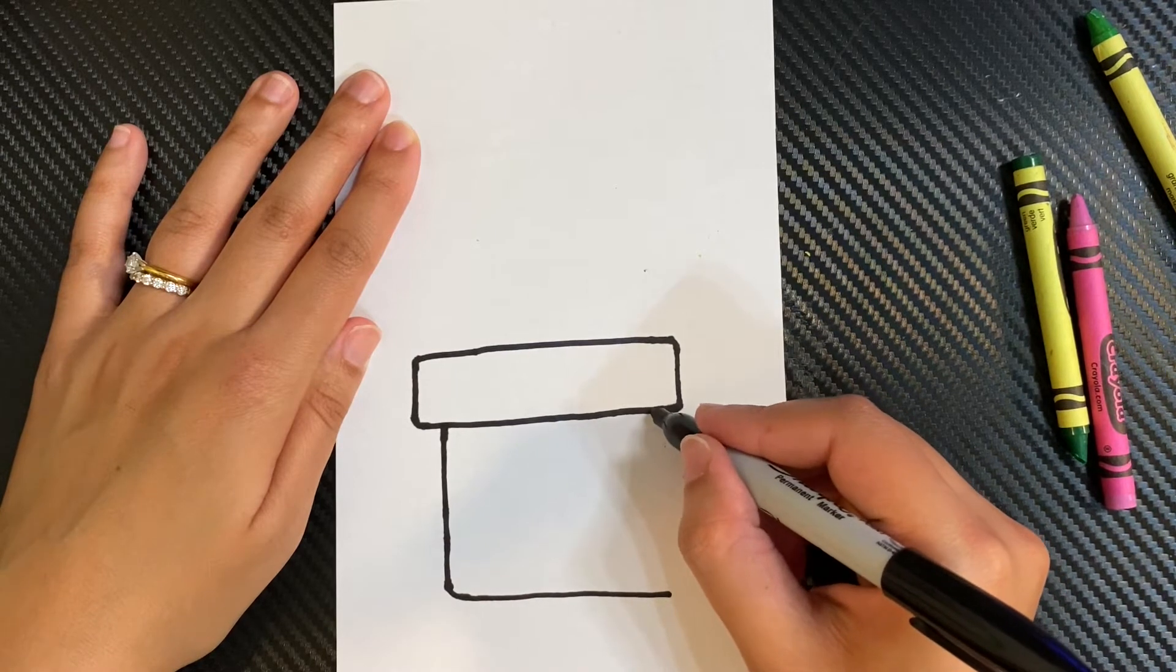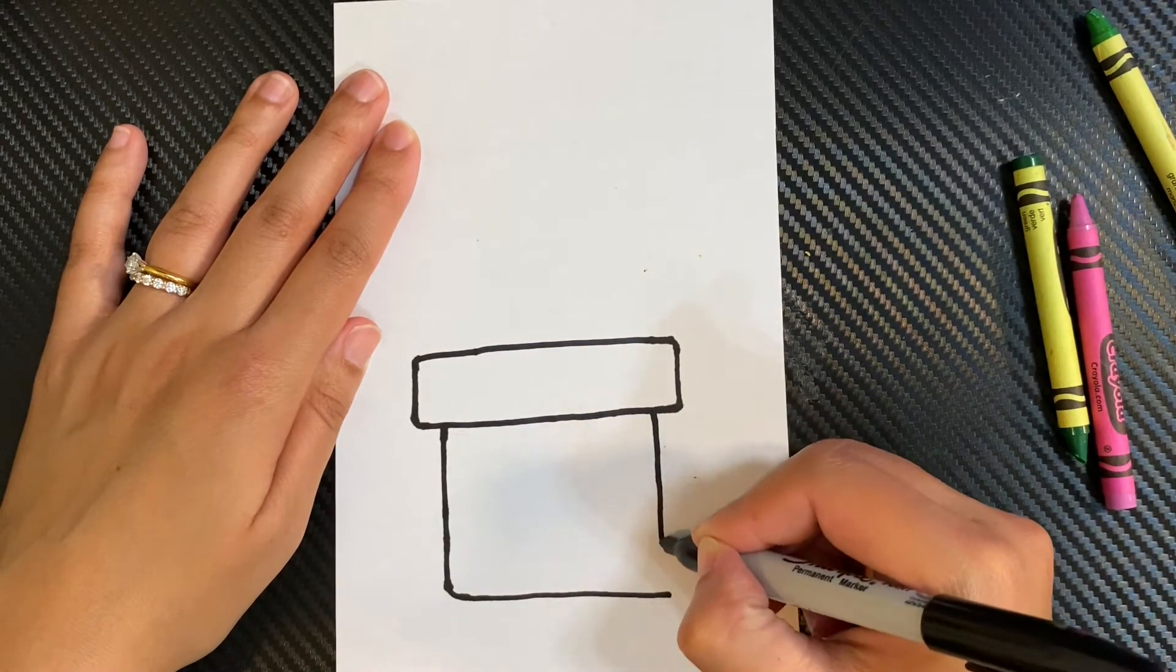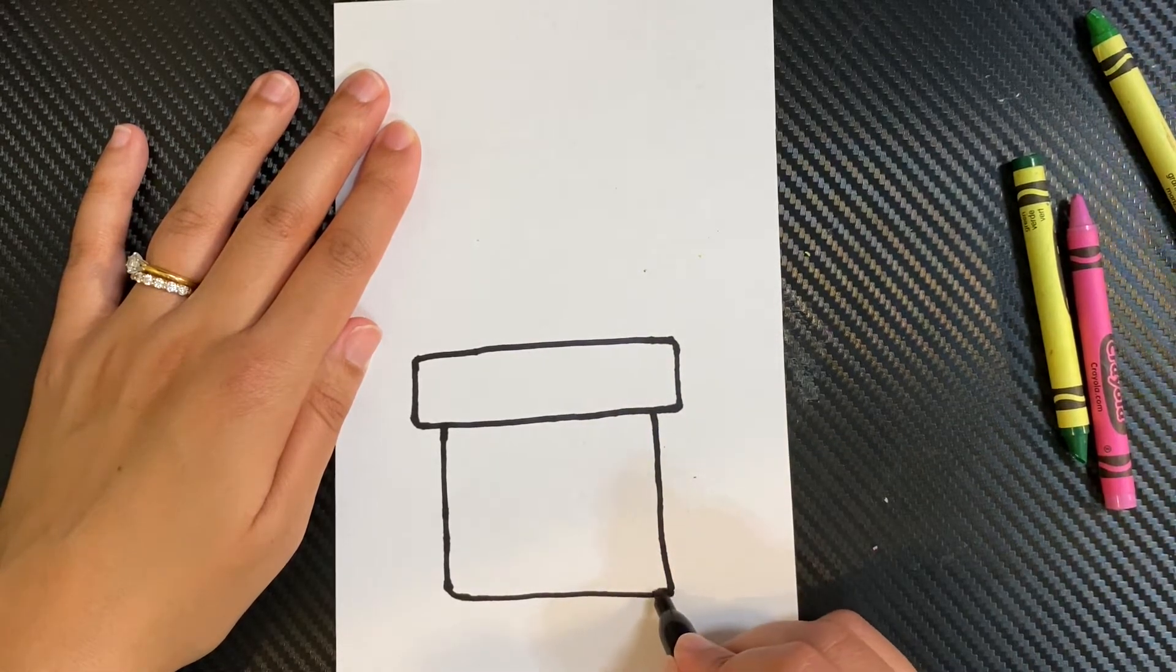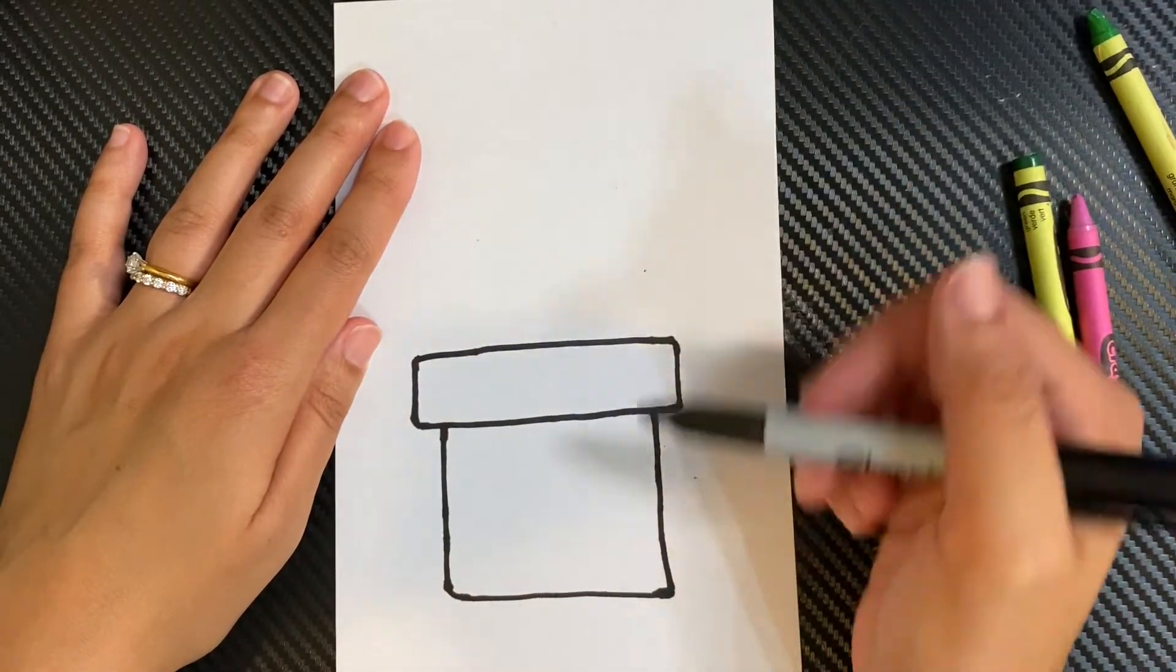Same thing, find a spot near the edge and go down, go to the corner and out. Next, we're going to draw the cactus. So that was the pot.